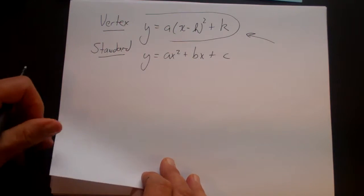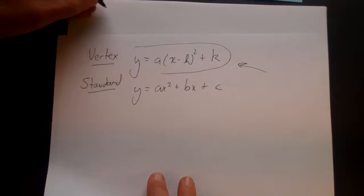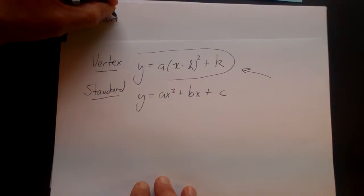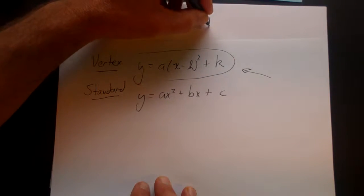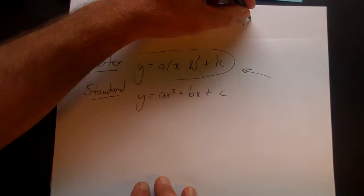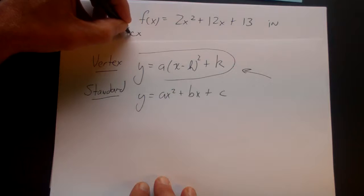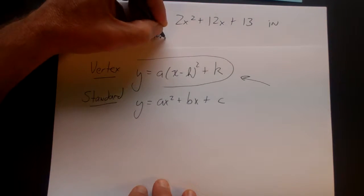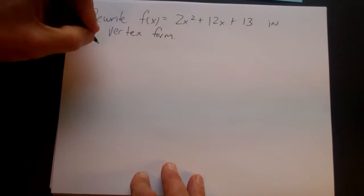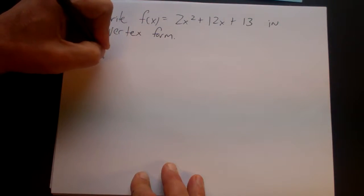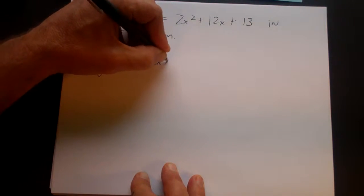So oftentimes we're given a problem that looks like this, and it simply says rewrite f of x equals 2x squared plus 12x plus 13 in vertex form. Vertex form is also called hk form. And here's the steps to do this.